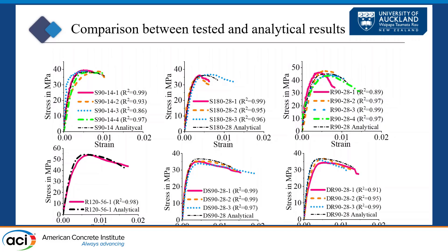The numbers look very good — we have an R-squared value of 0.95 to 0.97, very high. But that makes sense because we are predicting our own data. So what I'm trying to say is we need more tests, especially bigger prisms, because 150 millimeters — six inches — is nothing. But I think it's looking good, and from here we can move to a more prescriptive design method that will be more palatable for ACI and engineers.